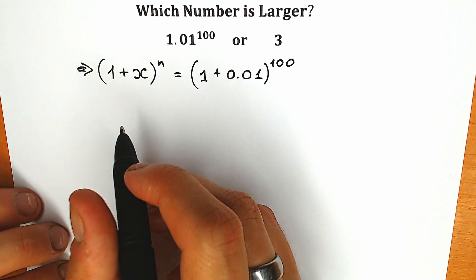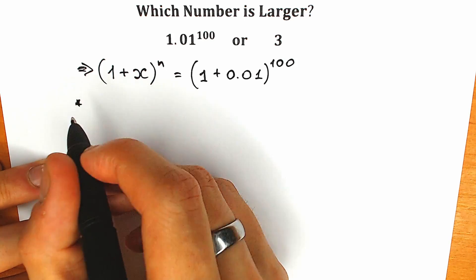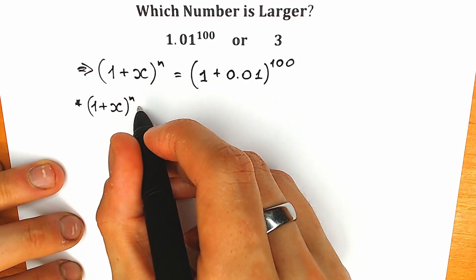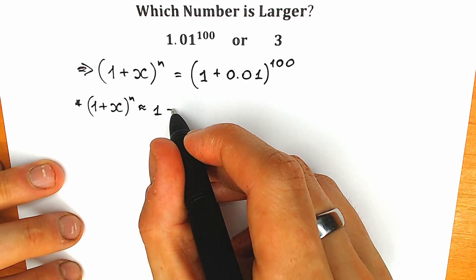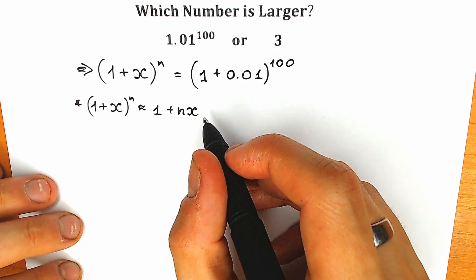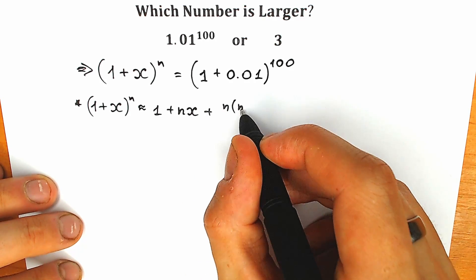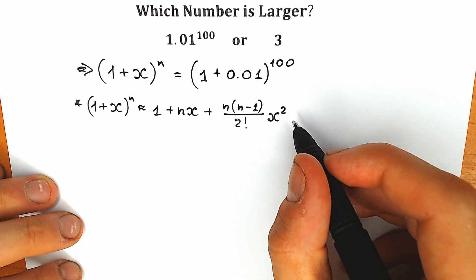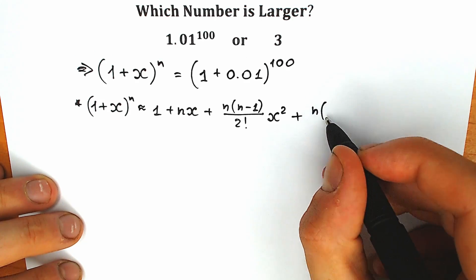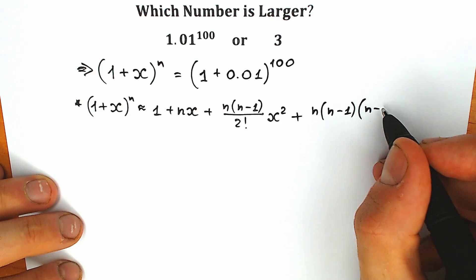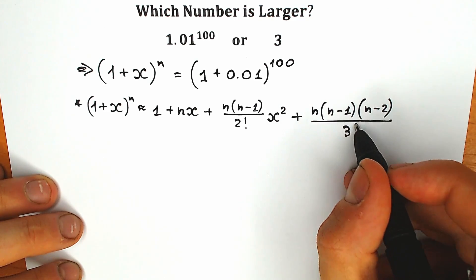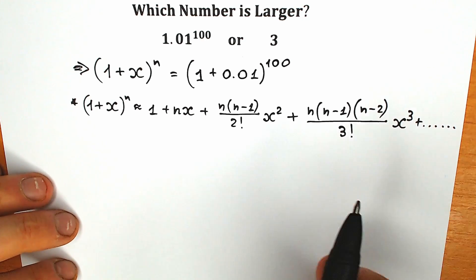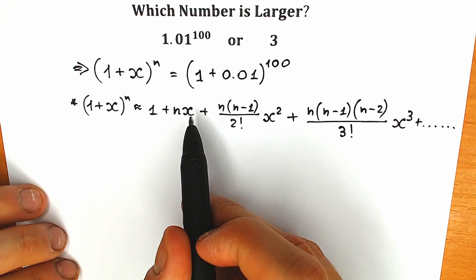How does the formula look? The binomial expansion of (1 + x) to the power n is approximately equal to 1 plus nx, plus n(n−1)/2! times x squared, plus n(n−1)(n−2)/3! times x cubed, and so on. I really hope that we only need these four terms to get our approximate answer.